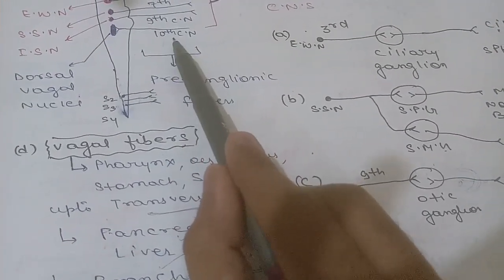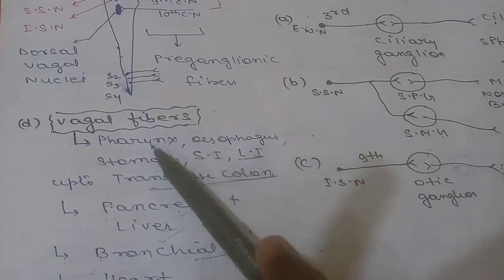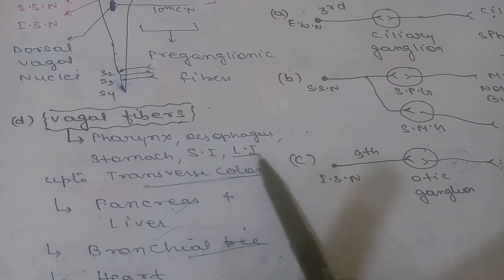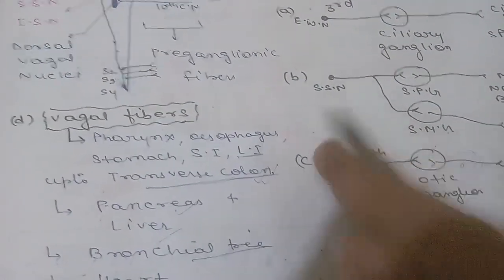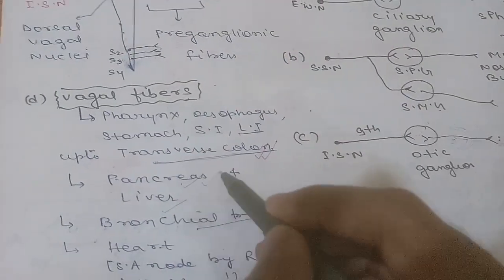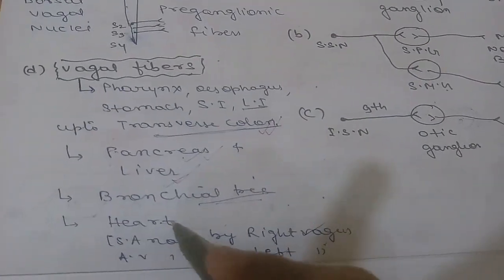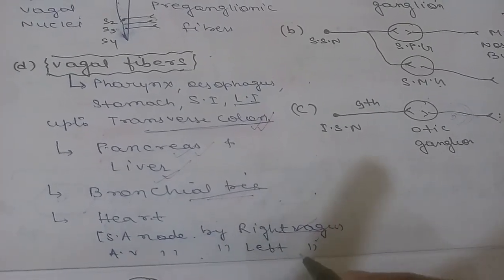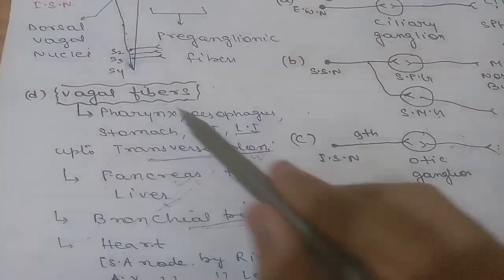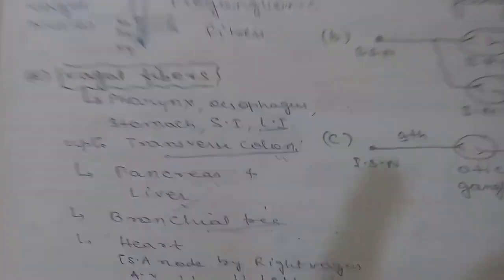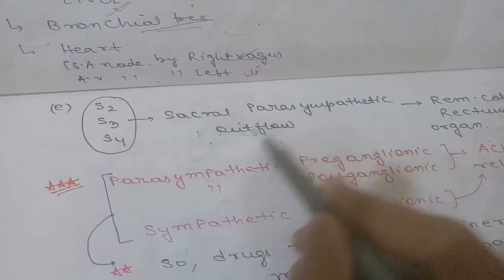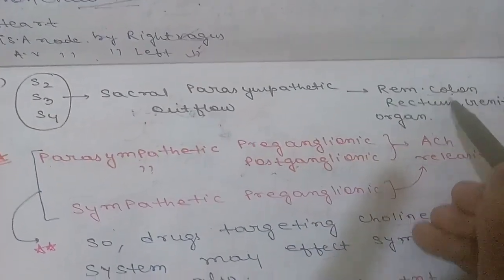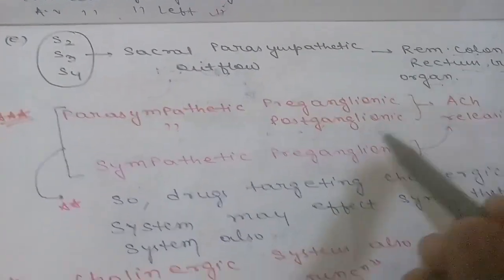The dorsal vagal nucleus gives rise to the vagus nerve (10th cranial nerve). Vagal fibers supply the pharynx, esophagus, stomach, small intestine, and large intestine up to the transverse colon — this is important. It also supplies the pancreas, liver, bronchial tree, and heart: the SA node is supplied by the right vagus and the AV node by the left vagus. From S2, S3, S4, sacral parasympathetic outflow supplies the remaining colon, rectum, and genital organs.